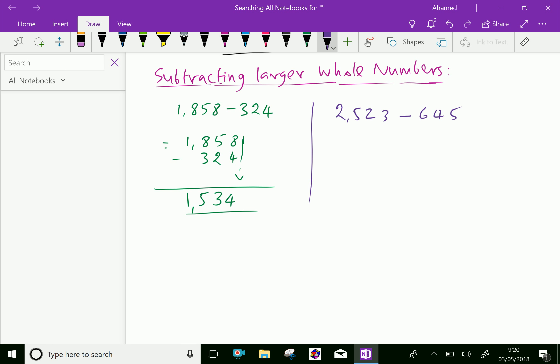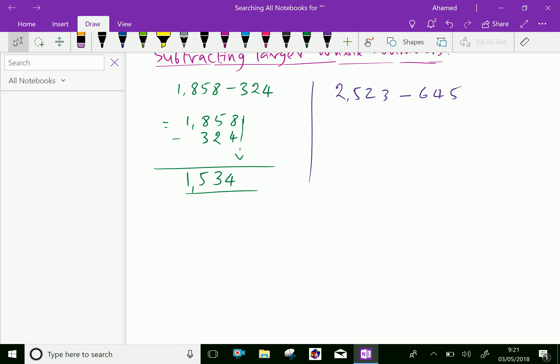Here, let us align like the previous discussion: 2,523. The second number aligns from right to left as 645. For subtraction here, 3 minus 5 will not give a positive number, which means 3 minus 5 cannot be done here.